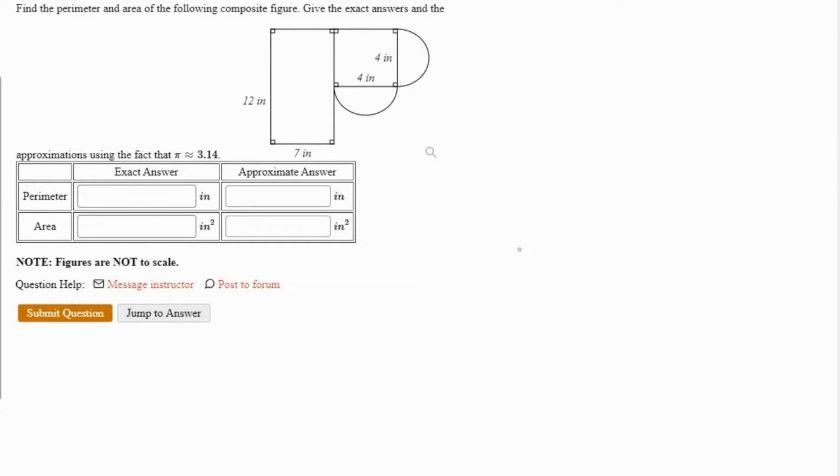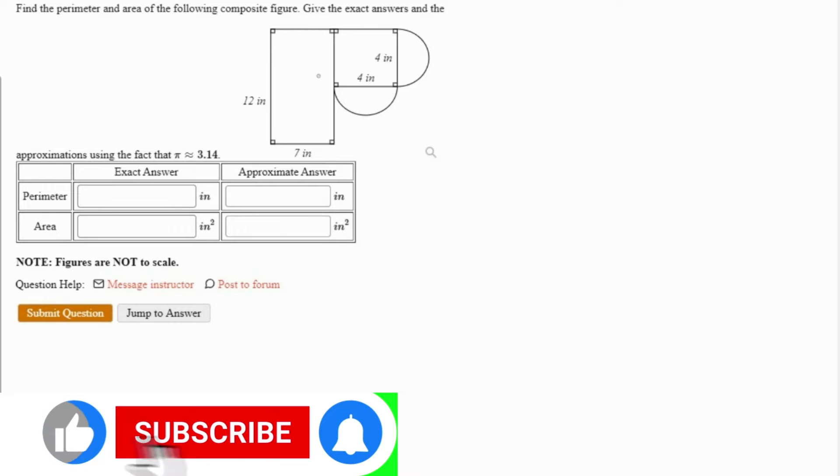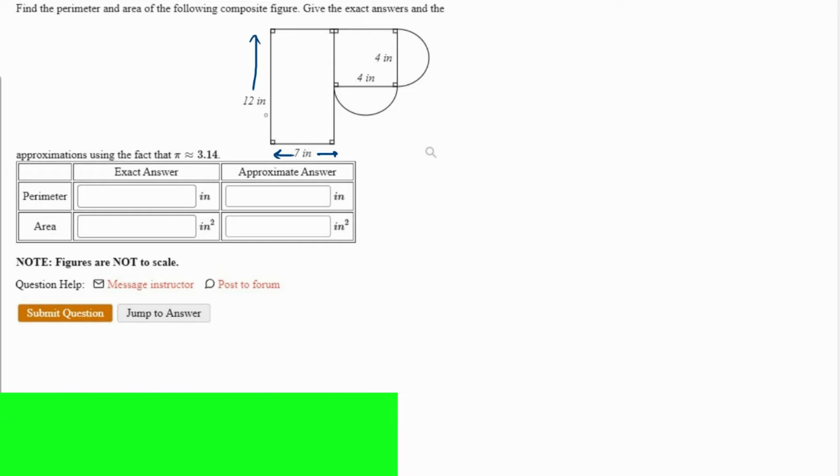This is an interesting question. This is a composite figure and we need to find its perimeter, exact and approximate, and area, again exact and approximate. Let's talk about perimeter. First off, if this is 7 and this is 12, this is 4, this is also 7, this is also 4, this is also 4, and this is also 4. So if this is 12 and this is 4, definitely the remaining 8 is this.